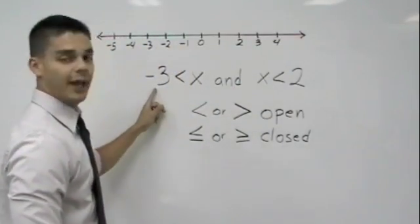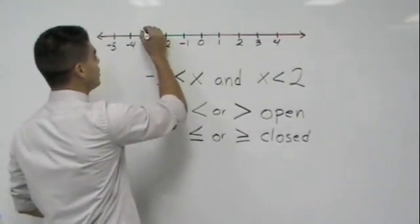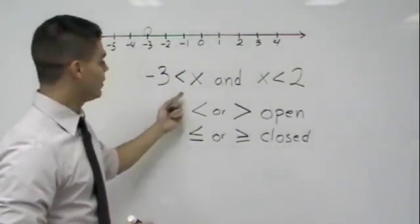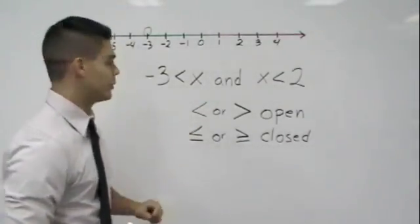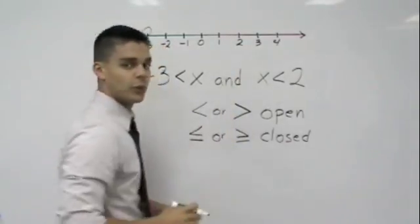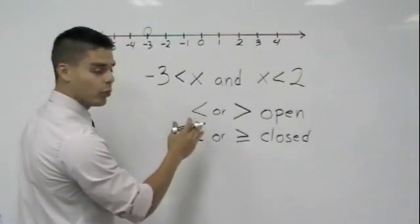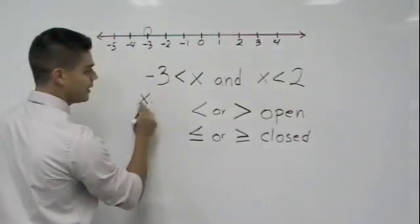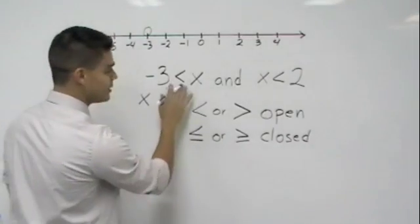First one says, negative three is less than x. So first of all, we know it's an open circle at negative three, and then we're saying that x is everything greater than negative three. If I know my greater values, they're all going to be towards the right. Now, another way of doing this is always put your variable or your x on the left side. Meaning if I put my x on this side, I must now flip the inequality to face the x.